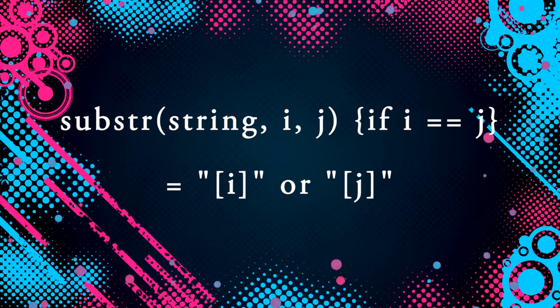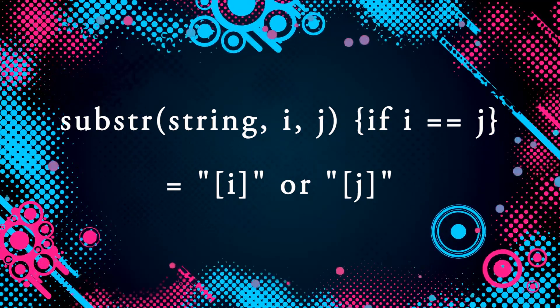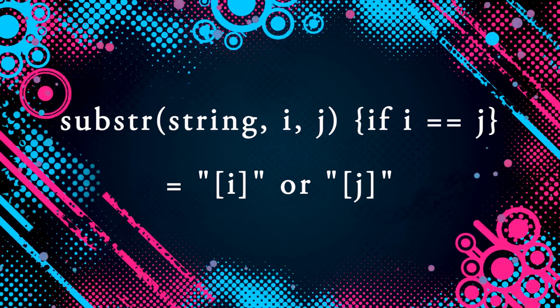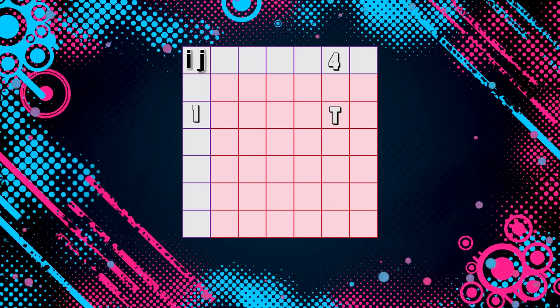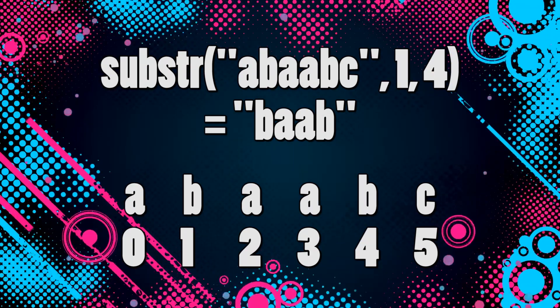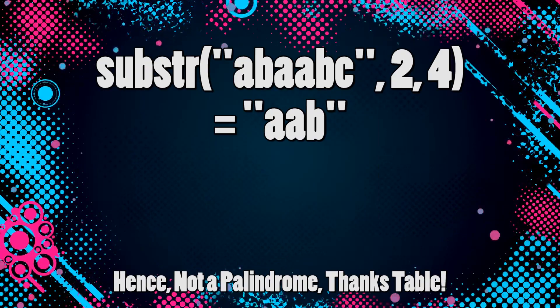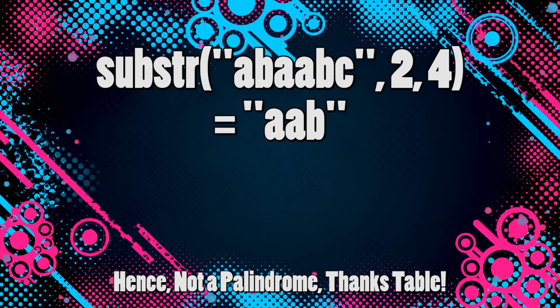i and j can also be the same thing — if i and j are equal, we are referencing only one letter from the string. The table stores values of true or false. If cell i,j is true, that implies the string from index i to index j in the given string is a palindrome. If cell i,j is false, that implies the string from index i to index j is not a palindrome.